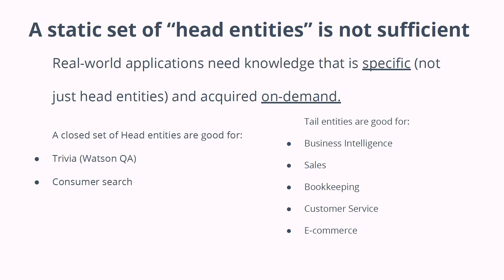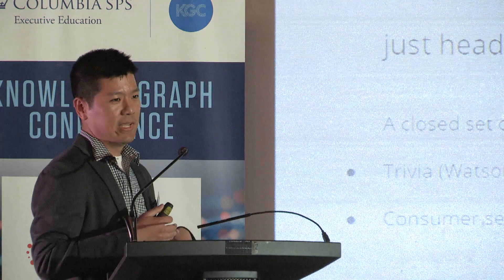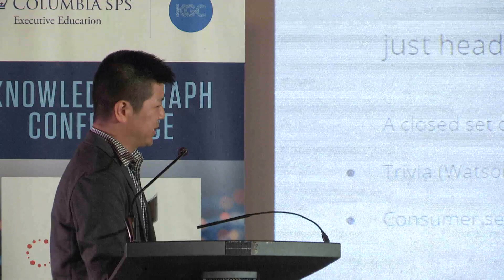But once you get into the business world and useful applications, you need the tail entities. Applications like business intelligence, sales, bookkeeping, customer service, e-commerce, supply chain management, procurement, and accounting. In these things, you're not trying to sell things to Tiger Woods or recruit Barack Obama.